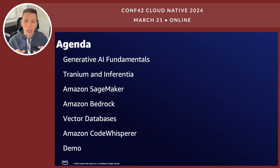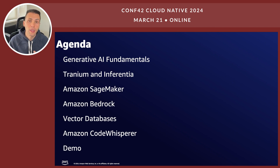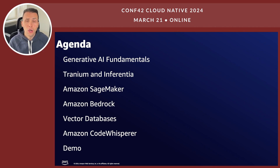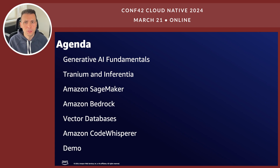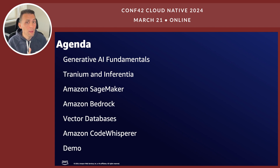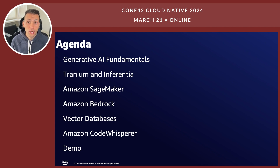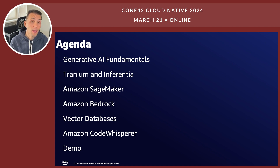Let's look at a quick agenda. I'm going to start with a presentation talking at a very high level about generative AI and its big impact in the world and in applications being built today. Then I'll talk about the infrastructure level — what AWS is doing with our own chipsets called Inferentia and Trainium — and also the wide variety of EC2 instances with NVIDIA graphics cards. After that, I'll talk about application services and platforms, including Amazon SageMaker and SageMaker JumpStart.